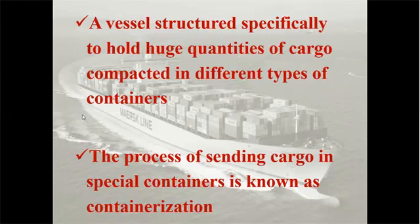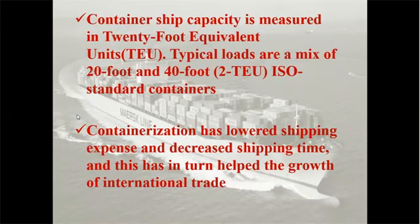The process of sending cargo in containers is called containerization. In a container, we measure it in terms of TEU. TEU is short for Twenty-foot Equivalent Units. There are two types of containers available in the market: first, the 20-footer, called one TEU; and another is the 40-footer, which we call two TEUs. When you see a port handling a lot of TEUs, that means the port is handling a lot of containers. The beauty of containerization is that it has lowered shipping expenses and decreased shipping times, indirectly helping to flourish international trade.